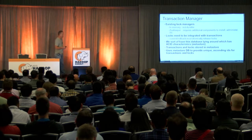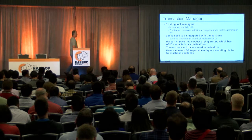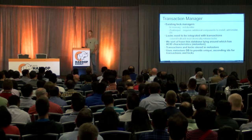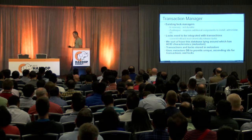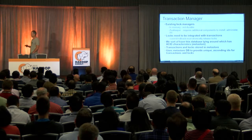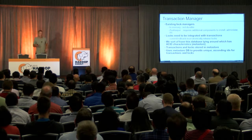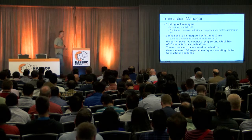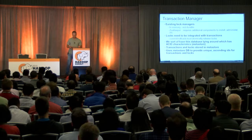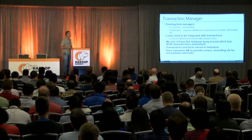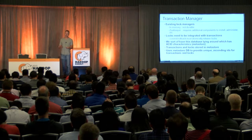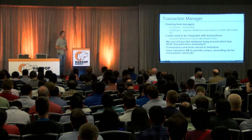What made this much easier is we realized we already have something transactional at the core of our metadata system: a relational database. We use MySQL, Postgres, or whatever you want in your setup at the core of Hive's metadata system to store metadata. We could rely on its transactional semantics to give us transactions and locks. The Metastore now provides unique ascending IDs for transactions and locks — it's often called a time server, though it's not actually time, it's just giving IDs that are guaranteed to be ascending.